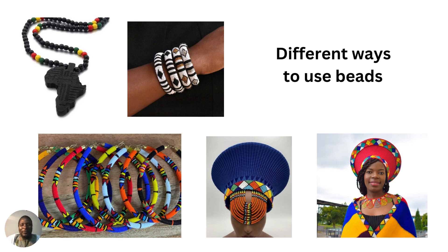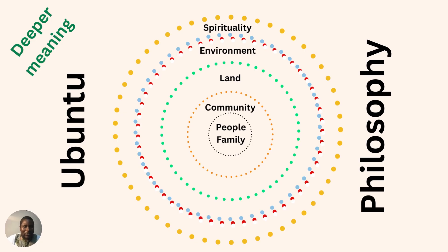However, there is a deeper meaning to all of them, and that deeper meaning is Ubuntu. There are Ubuntu values conveyed by these beads. For example, black represents people — it represents humanity, it represents family.